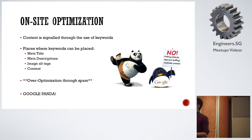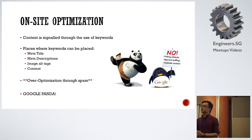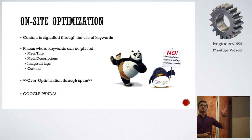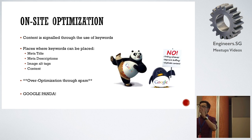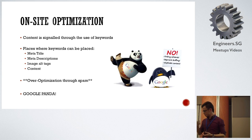What about the URL itself? The URL is one of the ranking signals as well. For example, if you are Amazon.com/SEO, you will rank for SEO better than someone who doesn't have that keyword inside their URL — like slash A-B-C-D-E. That's one signal as well.